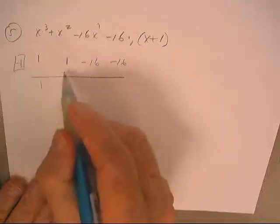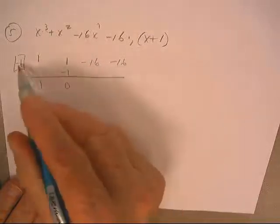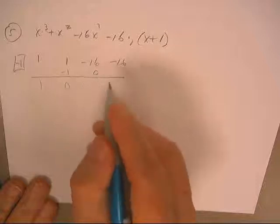We'll bring the one down times negative one, that's zero. Negative one times zero, hmm, that's probably zero.